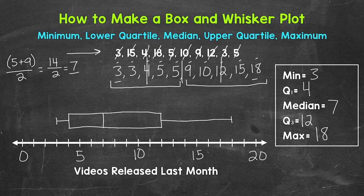And that's our final box and whisker plot. We have the minimum at 3, the first quartile at 4, the median at 7, the third quartile at 12, and then the maximum at 18.